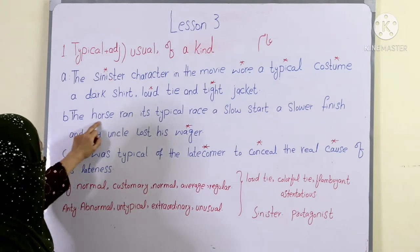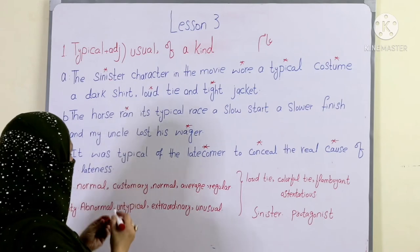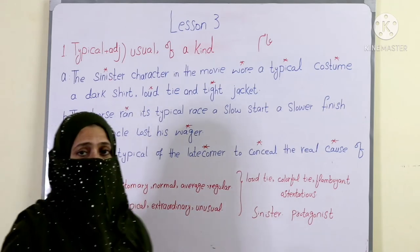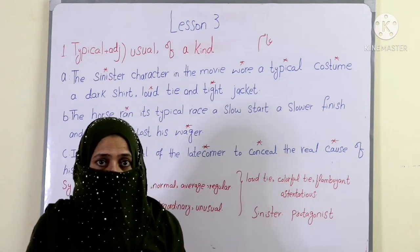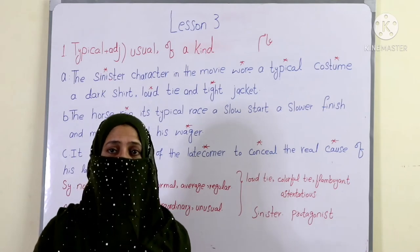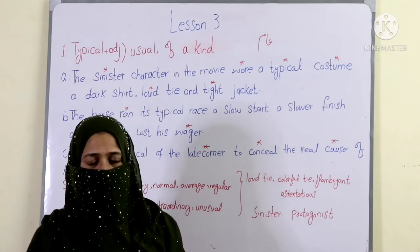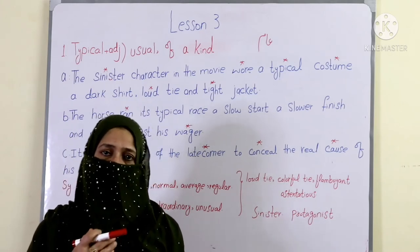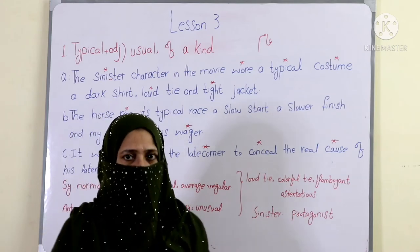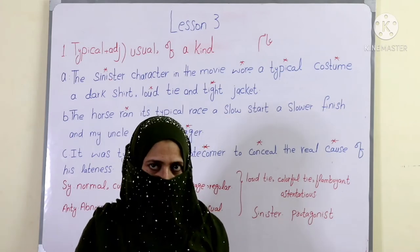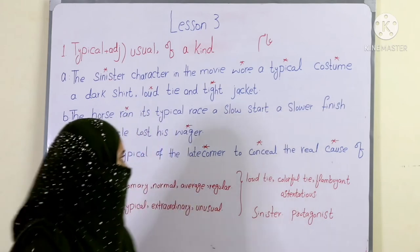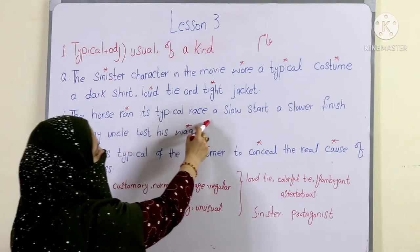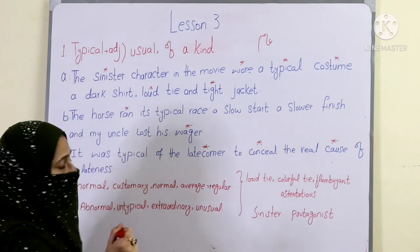The second sentence is: 'The horse ran its typical race — a slow start and a slower finish — and my uncle lost his wager.' The horse ran its typical race with a slow start and a slow finish, and as a result my uncle lost his wager. 'Ran' is the second form of 'run.' 'Wager' means a bet — he lost the bet he had placed because of the horse's slow start.